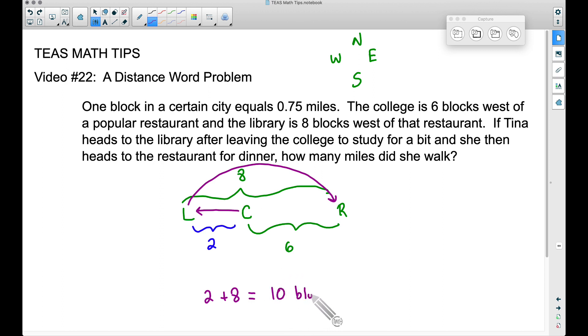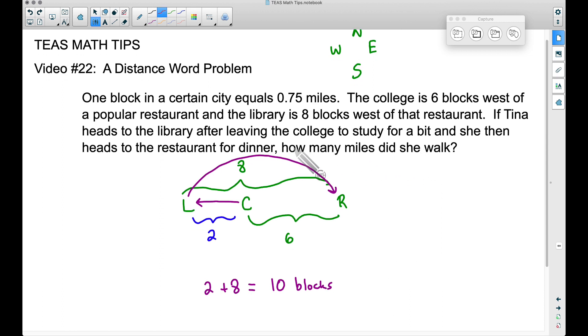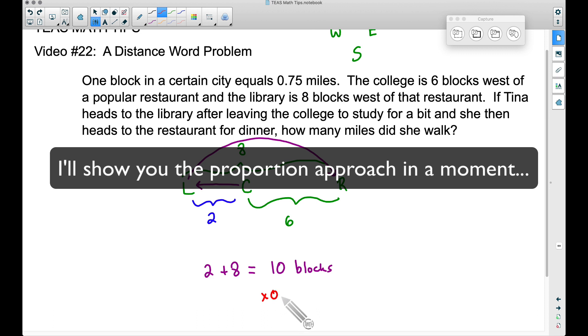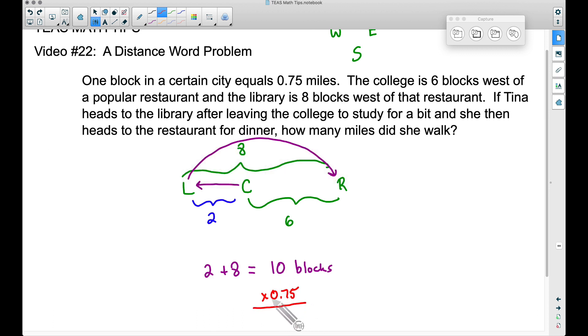Now with these 10 blocks, we want to make sure we answer the question. It says, how many miles did she walk? Now you could do a proportion here, but for the sake of speed, look at this. One block equals 0.75 miles. That's just one block. She went 10 blocks. The quick way to do this here is to simply multiply. So we're going to take that 10 times 0.75. That is a total of 7.5 miles, which is the same as seven and a half miles.